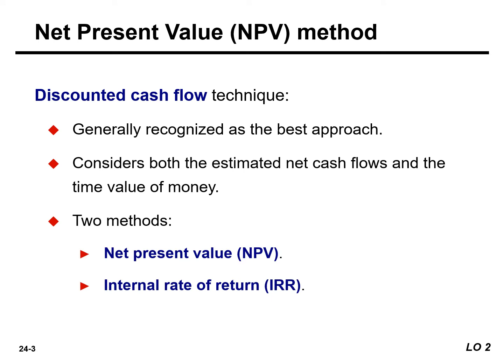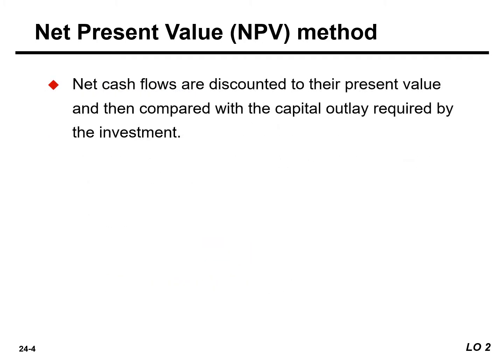We will discuss two methods: the net present value and the internal rate of return. The net present value, or NPV method, involves discounting net cash flows to the present value and then comparing that present value with the capital outlay required by the investment. The difference between these two amounts is referred to as the net present value.